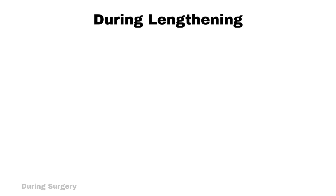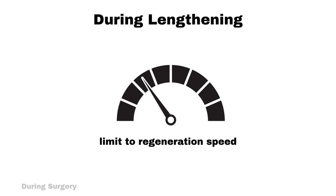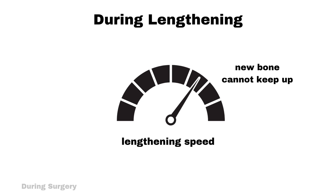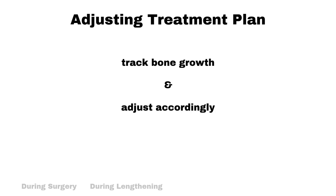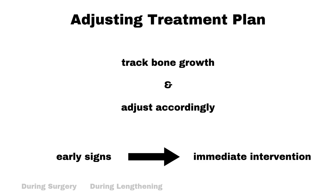During lengthening, bone has a natural limit to how fast it can regenerate. If the lengthening speed is too aggressive, the new bone may not form quickly enough, leading to nonunion. Surgeons must monitor bone formation carefully and adjust the lengthening speed based on x-ray progress. If early signs of nonunion appear, immediate intervention is necessary — the lengthening rate should be slowed or paused and additional treatments considered.